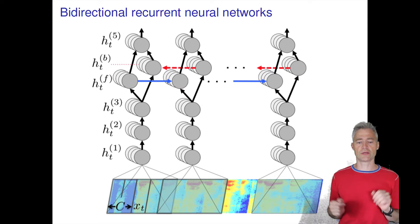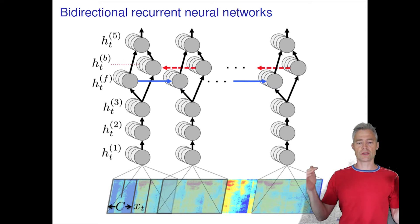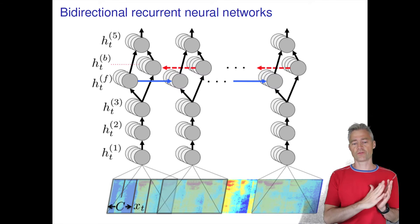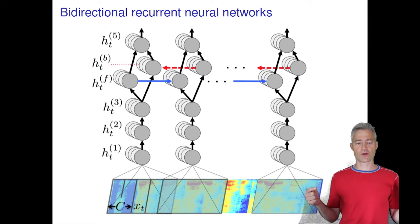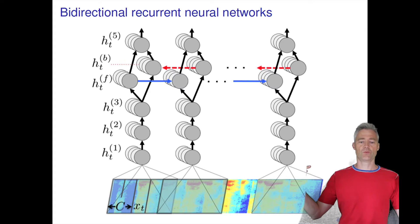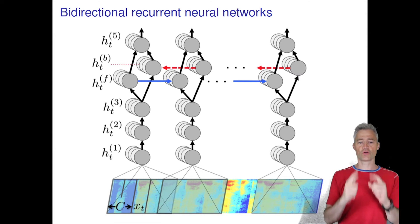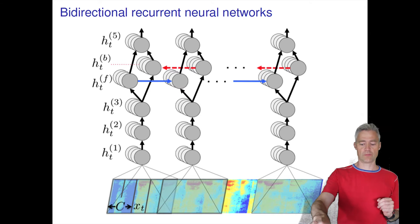Everything fits together here. This so-called bi-directional construction makes sure that at each time instant you can integrate information from both the past and the future. You have these two recurrent flows, and once they are completed you send the information upwards to a feed-forward neural network that will make the classification of what letter has been recognized at that time instant.